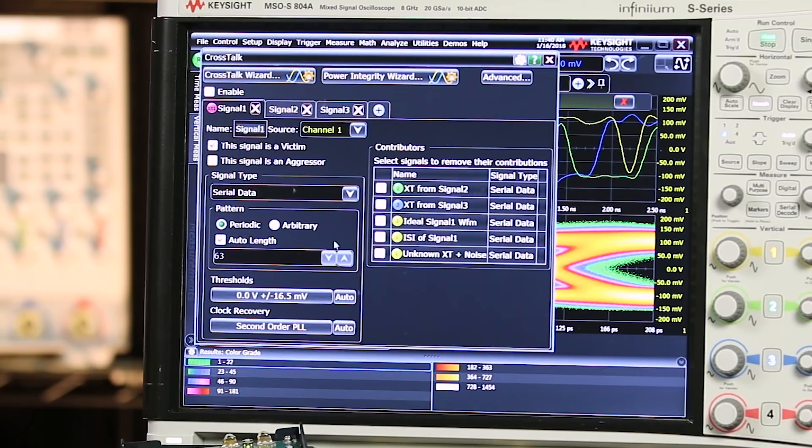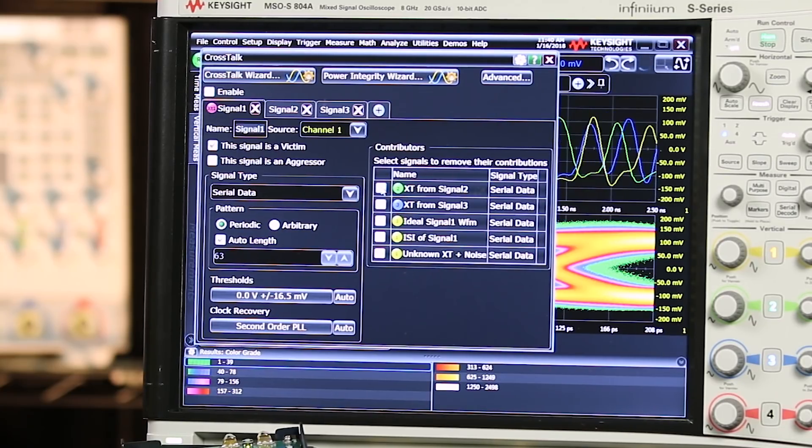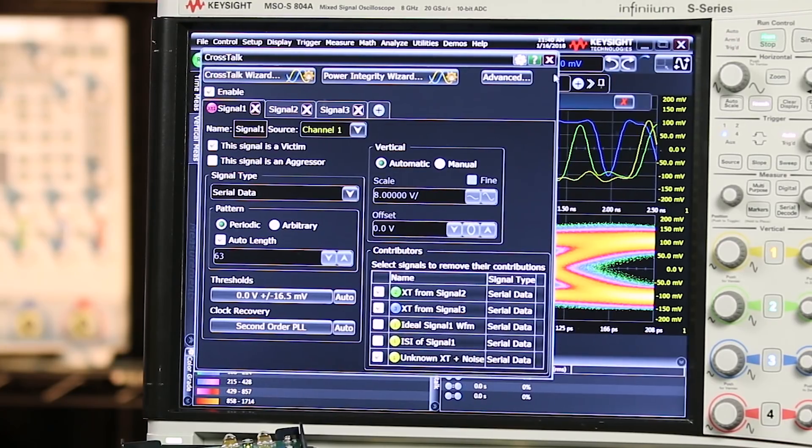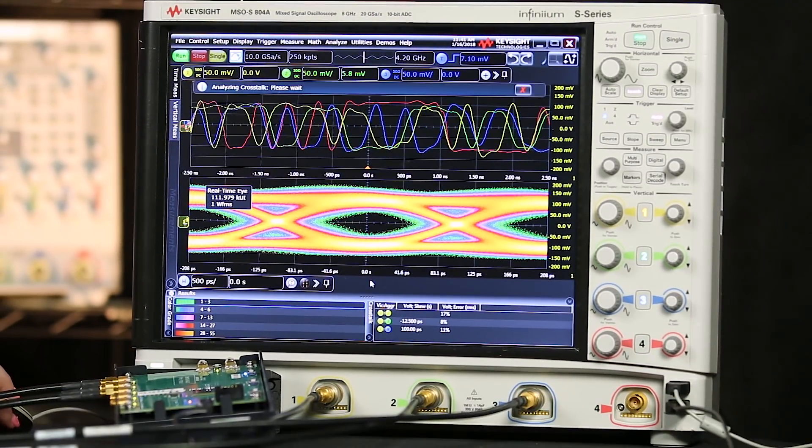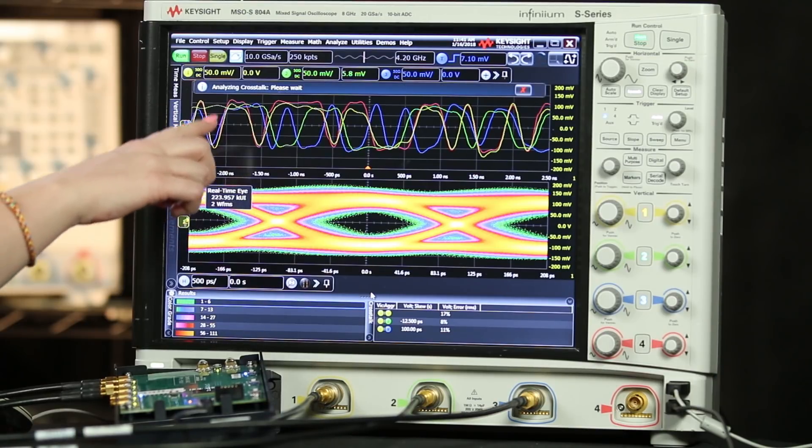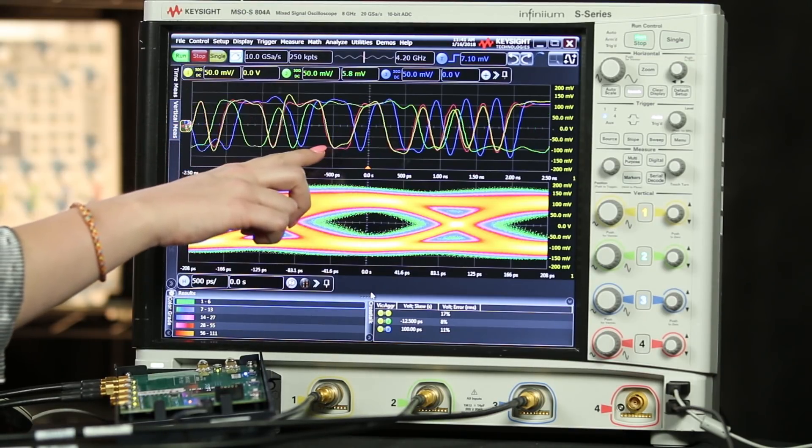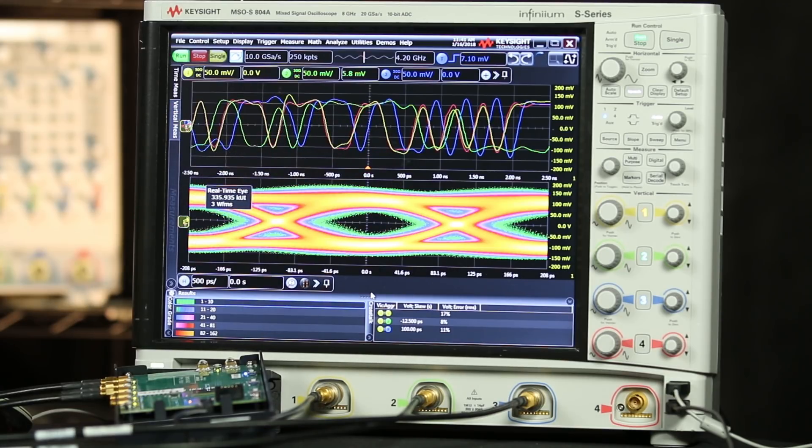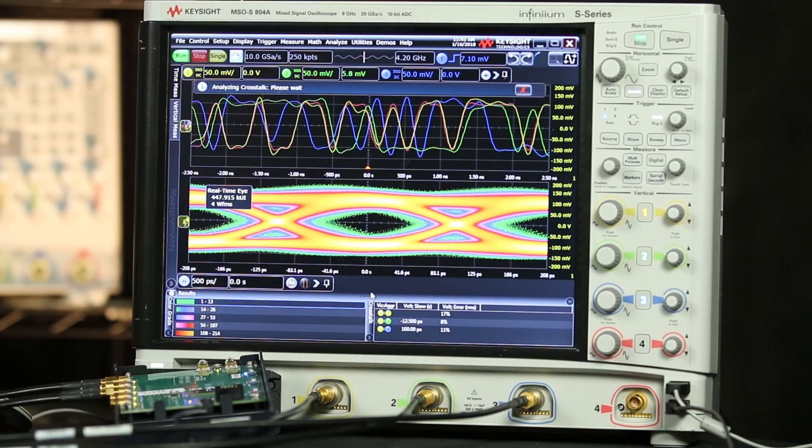Now going back to signal one, I'm going to remove crosstalk from signal two, signal three, and any unknown crosstalk or noise that could be occurring. Now I'll just enable this application and let the tool run. This red trace is now signal one, the victim signal, with all of the crosstalk from channels two and three, and any unknown crosstalk removed. And already we can see improvement.